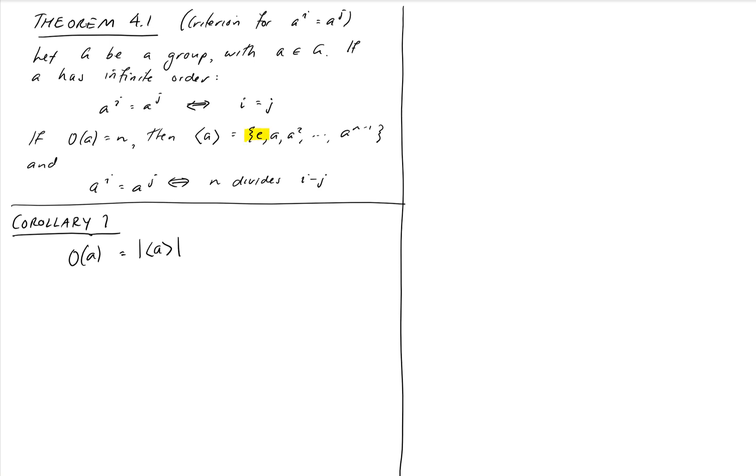We can see that from this one here. Remember, the order of the element is the lowest integer that gives us the identity when we take the power of a to that integer. So we can see that there are exactly n things in this cyclic group and so the order of that cyclic group is the same as the order of a itself. Which makes sense of why it is that both of those things are called order even though on the face of it they're quite different statements.